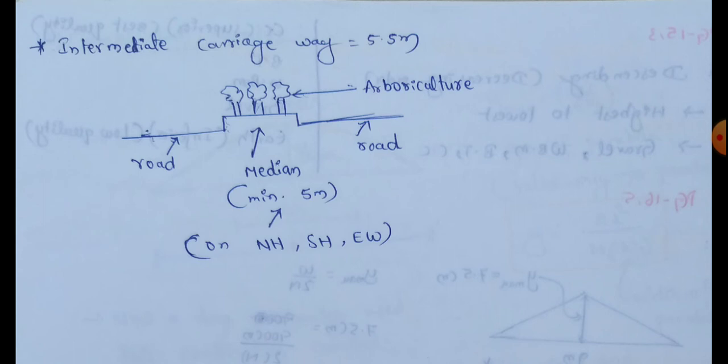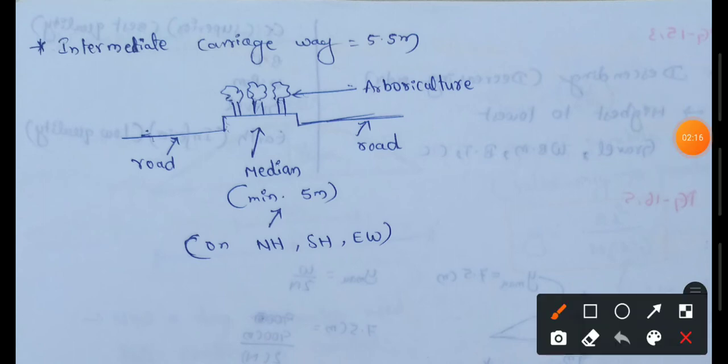Intermediate carriageway: the IRC recommendation for the intermediate carriageway width is 5.5m.